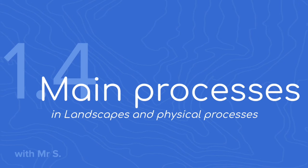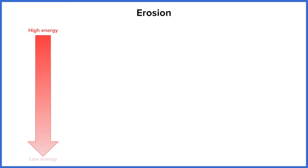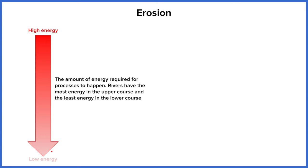So first let's have a look at erosion and we're going to start by looking at this idea of high energy to low energy. All erosion will occur on this continuum. Some things will happen where it's got a lot of energy, some things will only happen where it's got a little bit of energy left. This arrow represents the energy required for that process to happen.